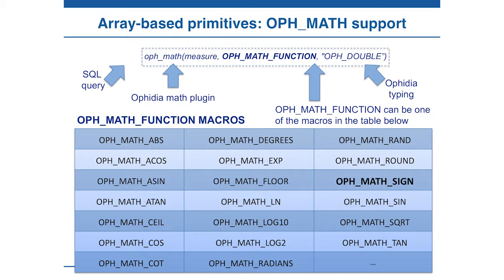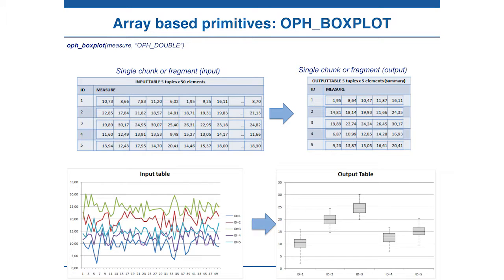Considering the OphMath primitive, we developed many macros and functions, and this is the list of functions we developed — the sine is one of these. You can launch the OphMath primitive using the syntax: OphMath with the measure, the macro, for example OphMathSine, and the type. Another example of a primitive is OphBoxPlot. We want to find the so-called five numbers — the minimum, the maximum, the first quartile, the third quartile, and the average — starting from an array. We can use OphBoxPlot with the measure and the type as input, and the output contains our five numbers.